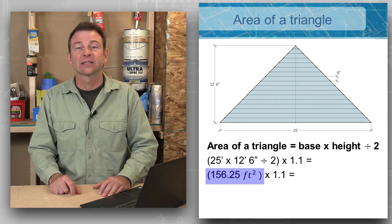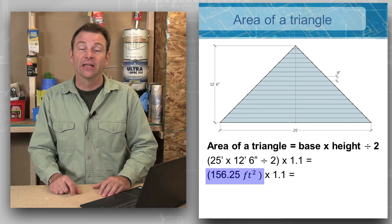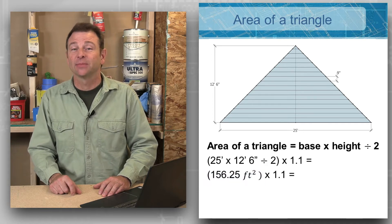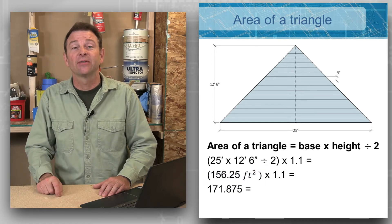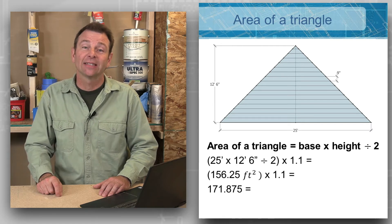When we multiply that times our 1.1, that's going to give us 171.875 square feet. That's almost 172 square feet, so we're going to figure that as our material.